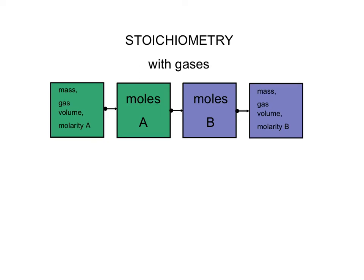In this lesson, we're going to discuss stoichiometry problems with gases. So far, we've done stoichiometry problems with masses — grams. We start with grams of one substance and end with grams of a different substance. Now we're going to talk about gases, and in particular, with gases, we work with volumes. So we'll start with the gas volume for one substance and end with a gas volume for a different substance.